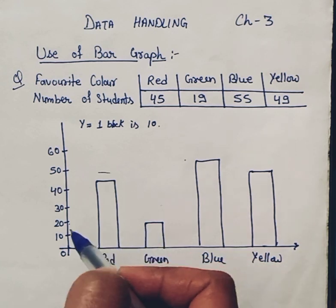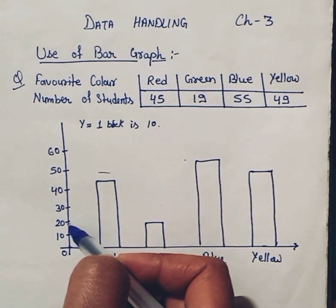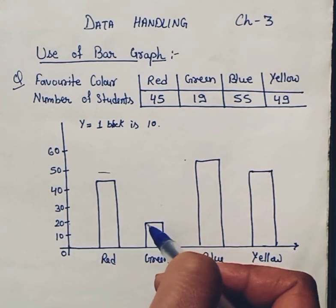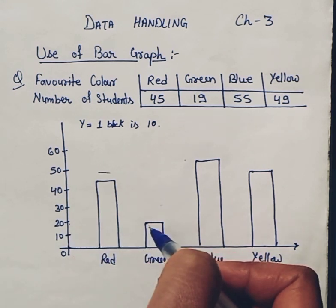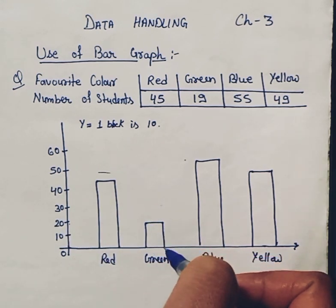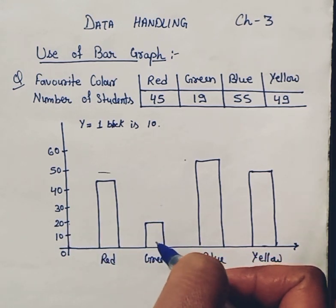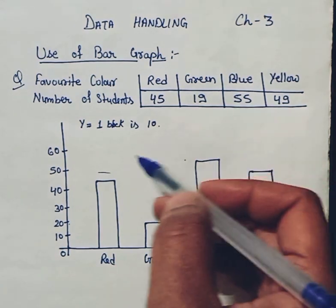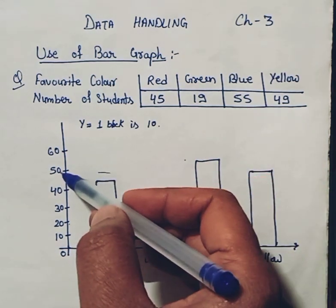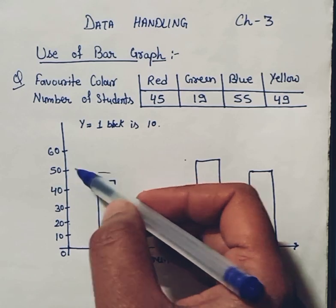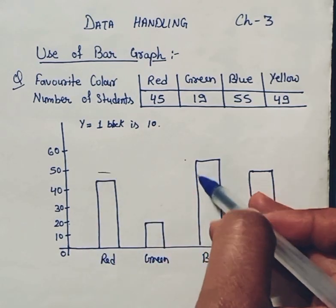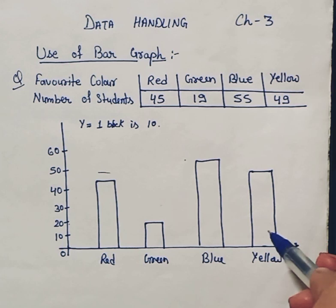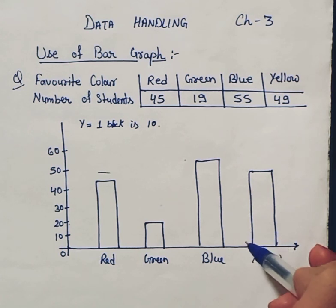For green color, 19 is one less than 20, so it will be approximately equal to the number 20 on the scale, and we make a block just below 20 for green color. For blue color we have 55, so we go in between 50 and 60 and plot a box using the scale over here.